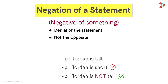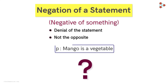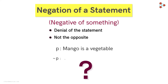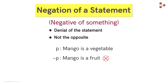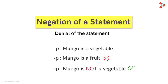Let's take one more example for clarity. Consider this statement. What will be the negation of this statement? Mango is a fruit? No, that is incorrect. Here too, we should not correct the statement — we just deny it. So the correct answer would be Mango is not a vegetable. So this brings us to the definition of negation: the negation of a statement is nothing but the denial of a statement.